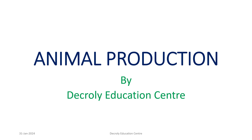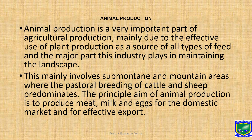Animal production is a very important part of agricultural production, mainly due to the effective use of plant production as a source of all types of feed and the major part this industry plays in maintaining the landscape. The principal aim of animal production is to produce meat, milk, and eggs for the domestic market and for effective export.